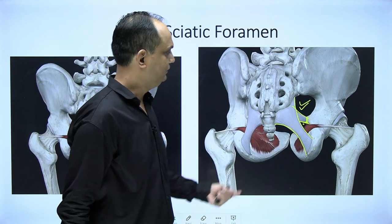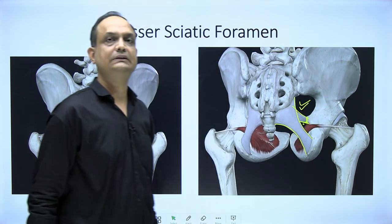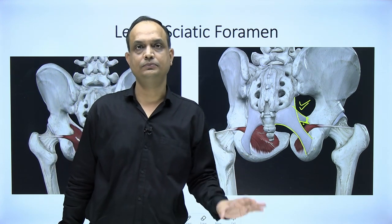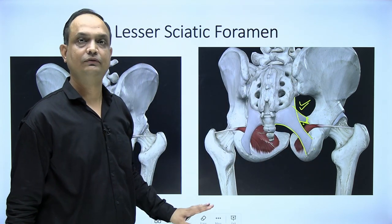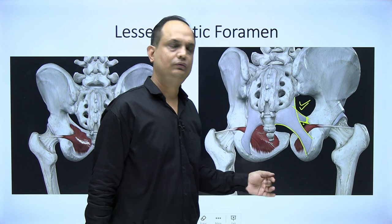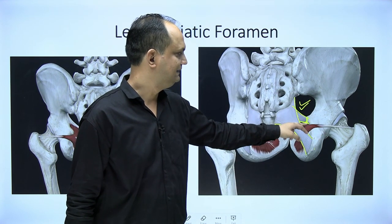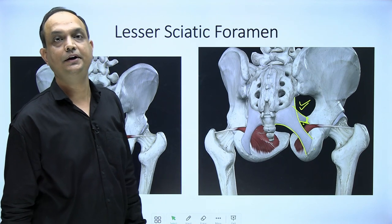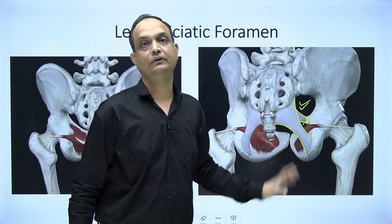Through the lesser sciatic foramen, the muscle tendon comes out into the gluteal region. The origin of obturator internus is deep — when dissecting from the posterior side it is not visible — but the tendon is visible once you remove the gluteus maximus. After removing gluteus maximus, you can appreciate the greater and lesser sciatic foramina and through the lesser sciatic foramen see the exit of the obturator internus tendon.